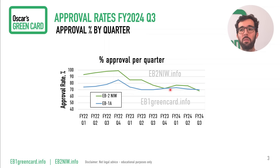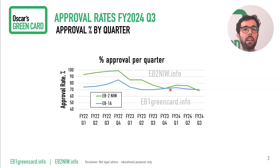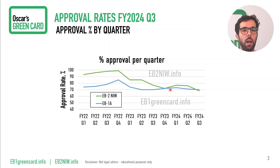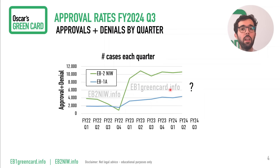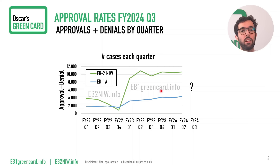My take is that cases that are not prepared properly, or people who are not qualified enough for either category, go for EB2NIW because it's more accessible, and we end up with these low numbers.